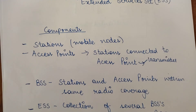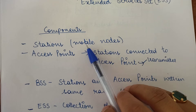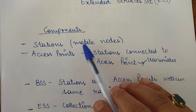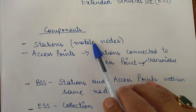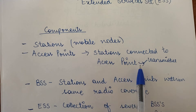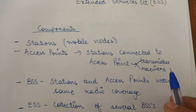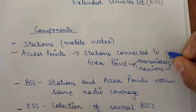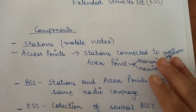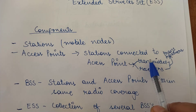Looking at the components of a wireless LAN, the first component is stations, which are nothing but mobile nodes — any electronic device which can send or receive data. The second component is access points, which consist of transmitters and receivers, and hence are collectively known as transceivers, which can both transmit and receive data. These access points help in transmitting or receiving data.